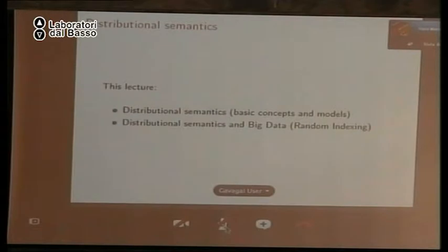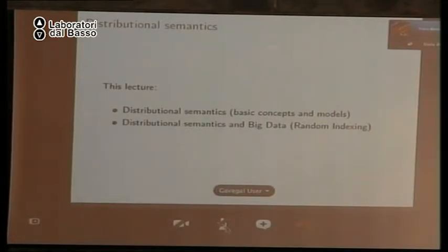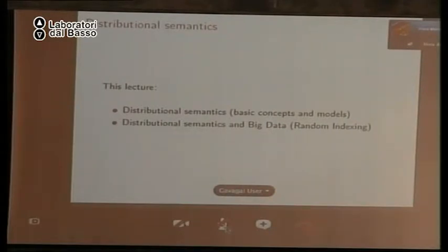After a short break, we'll continue talking about distributional semantics and big data. In particular, I'm going to focus on random indexing, which is a computational framework for building distributional semantic models applied to big data. As mentioned, I'm currently with a company called Gavagai. One of the things we do here is building models based on distributional semantics for very large data sets. I'll talk at the end of the talk about some of the problems and solutions we encounter doing that.